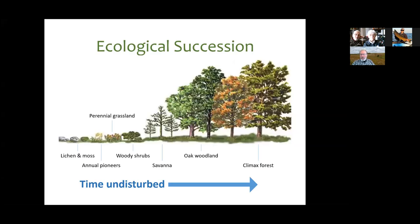Over time you start to get some woody plants like shrubs — the native ones are things like sumac and prickly ash — and then eventually a few scattered trees get established and you form an oak or oak-hickory savanna. Eventually those trees become more crowded together and you get a closed canopy, right on the borderline between this prairie-grassland ecosystem and the eastern deciduous forests.